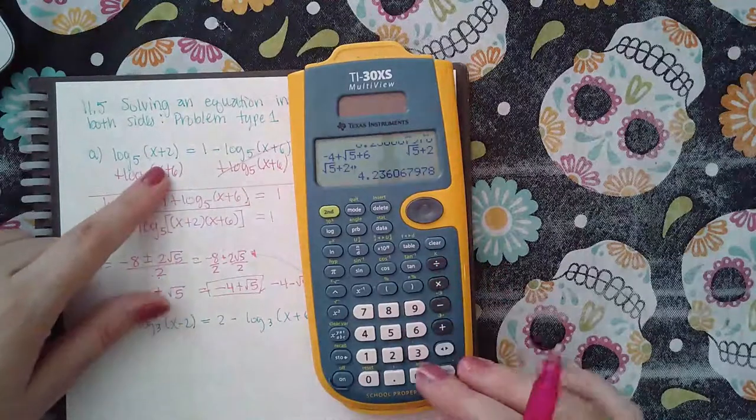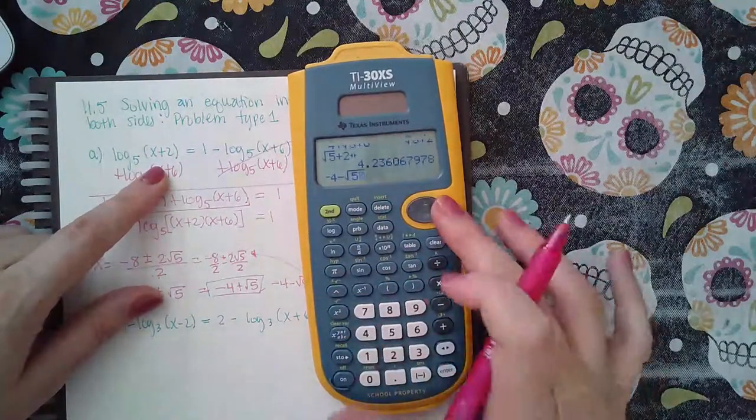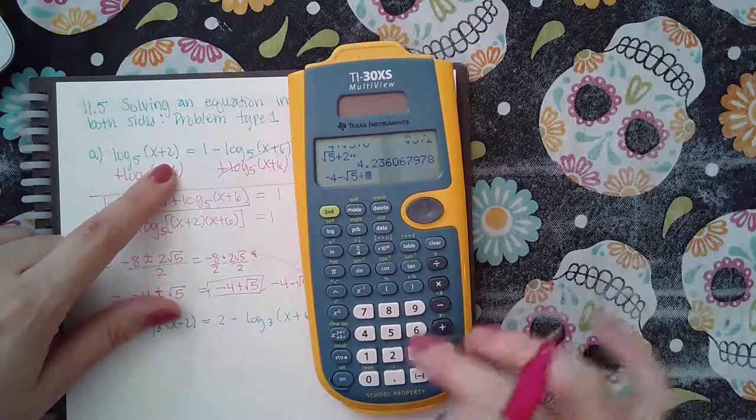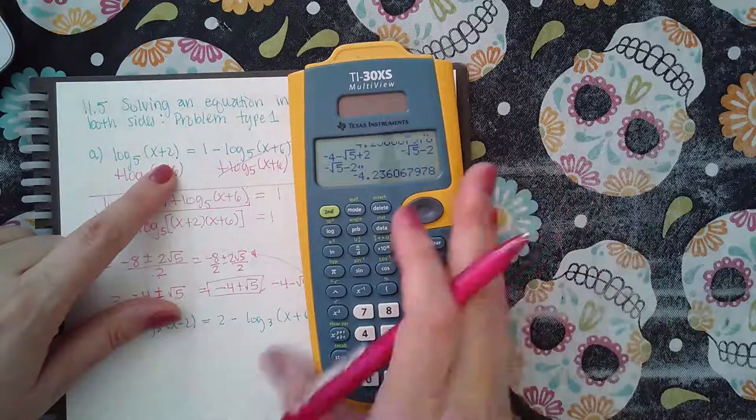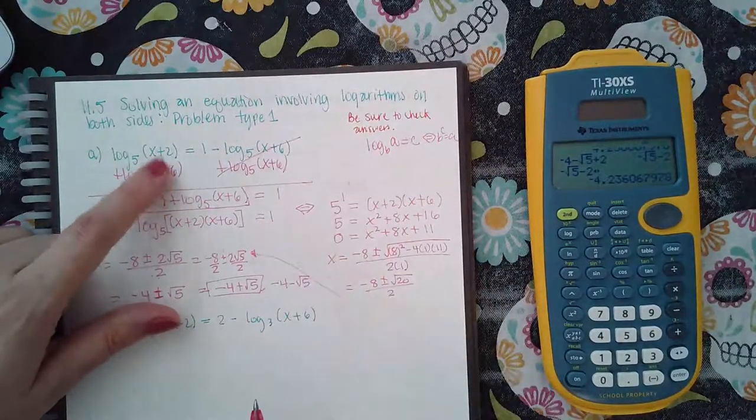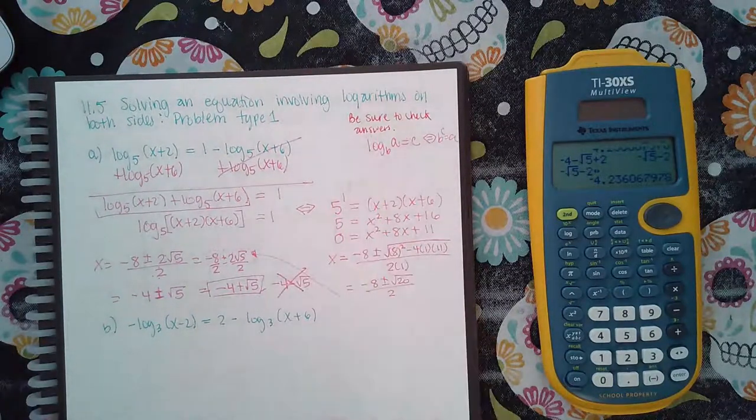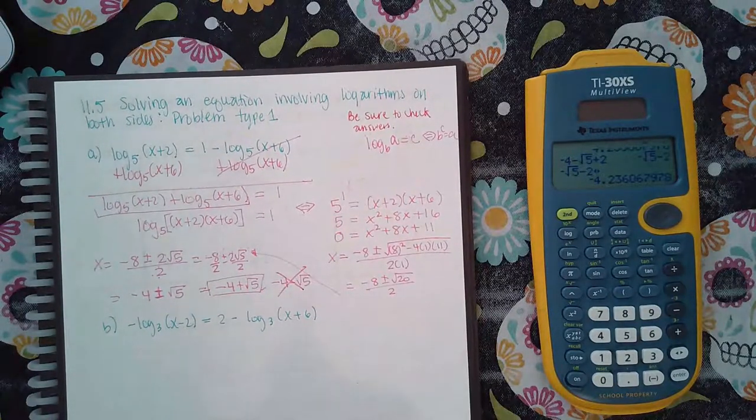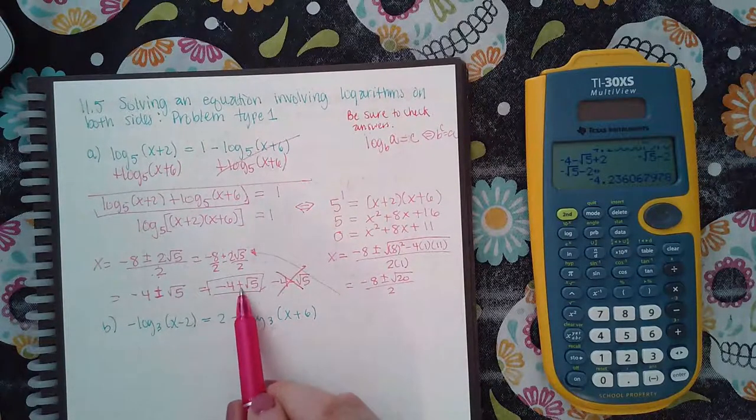Now let's check the other one. Negative four minus square root of five. And then here I'm gonna add two. And I get a negative number. It doesn't even matter if it works in the other argument. The fact that it makes one of the arguments negative means that this is not going to be a solution. So that means I only have one solution, and it's negative four plus the square root of five.